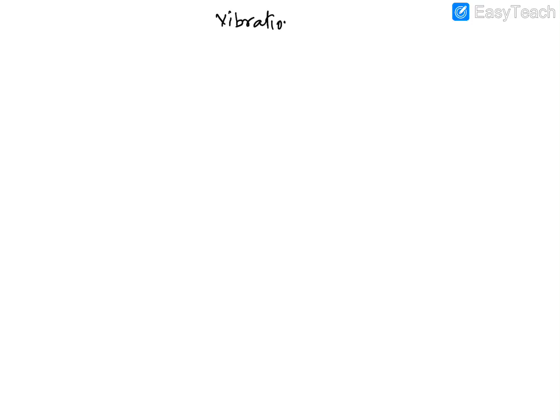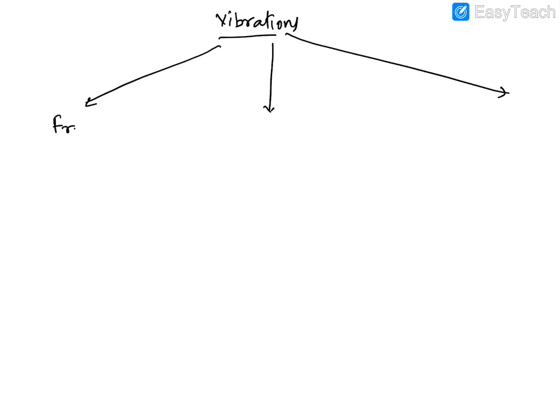The first type of vibration is called free vibration, also known as natural vibration. If you clamp a ruler at one end and pluck it, it will start vibrating for some time and then stop. That is its natural or free vibration.